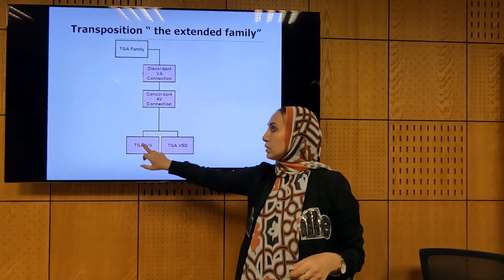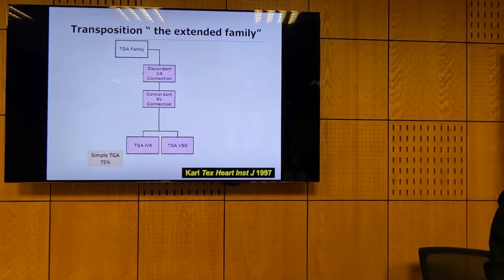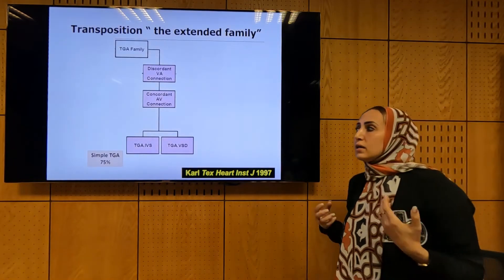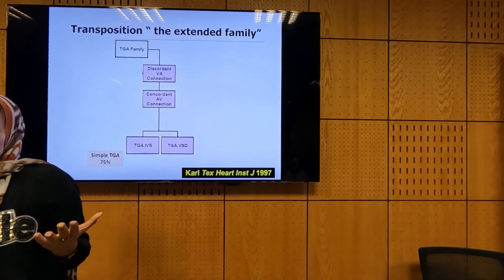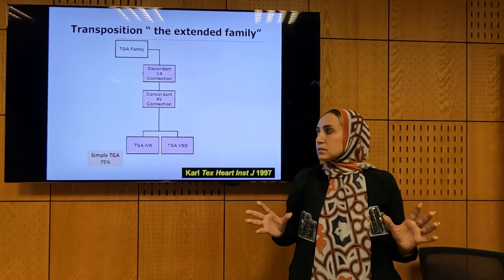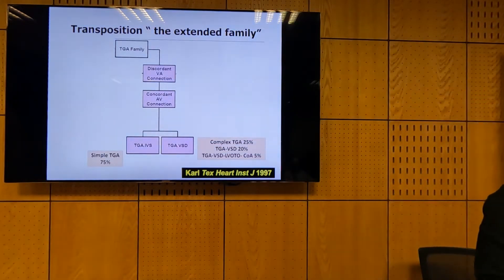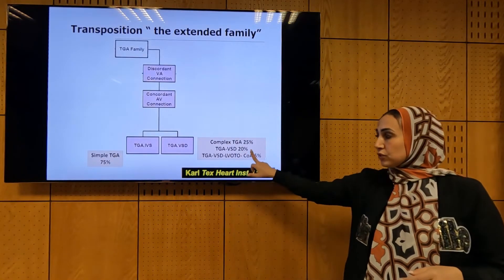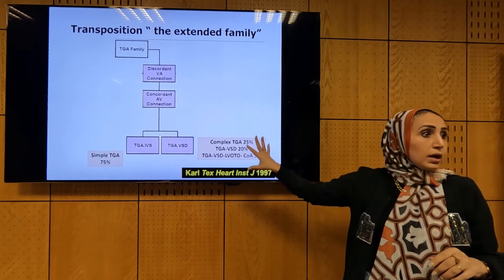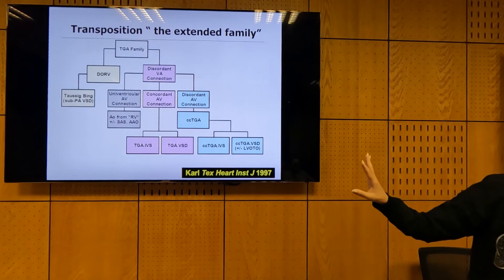In this family, we have TGA with intact ventricular septum and TGA with VSD. Usually we call TGA with intact ventricular septum 'simple TGA.' TGA is really a complex disease, but we use the name simple TGA when it's just transposition of the great arteries with no additional lesion — this constitutes 75% of patients. The other 25% is complex TGA: either TGA with VSD, which is the majority at 20%, or TGA with VSD and LV outflow obstruction, which is 5%.